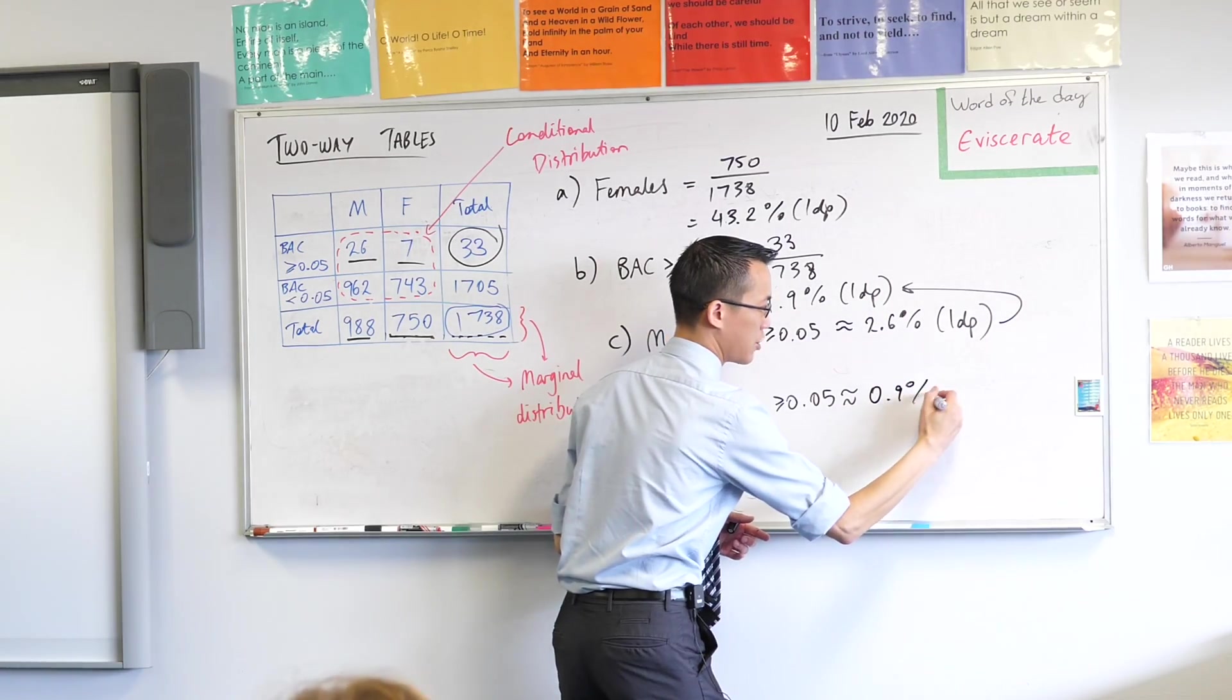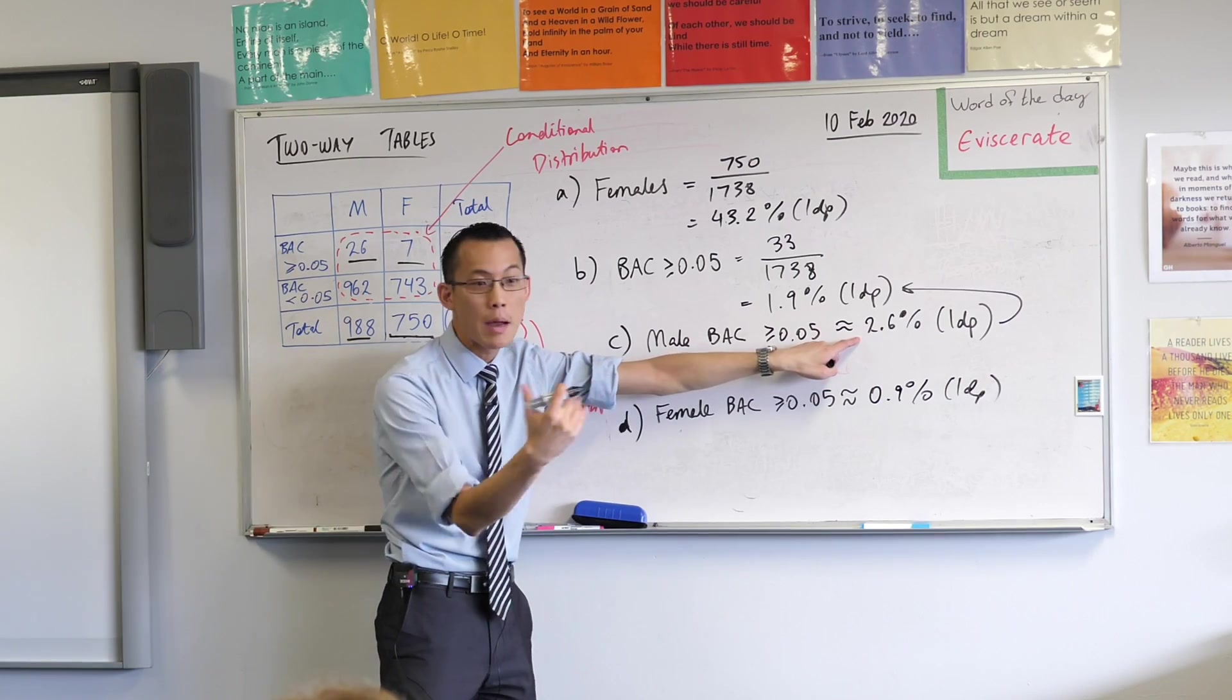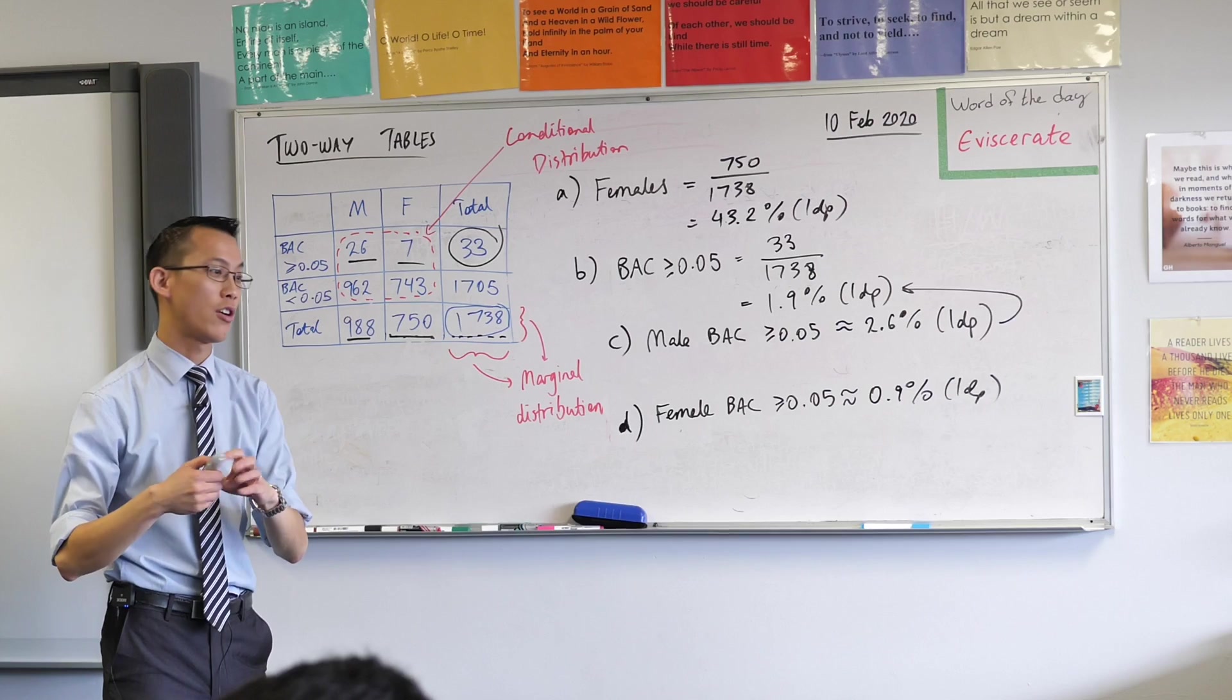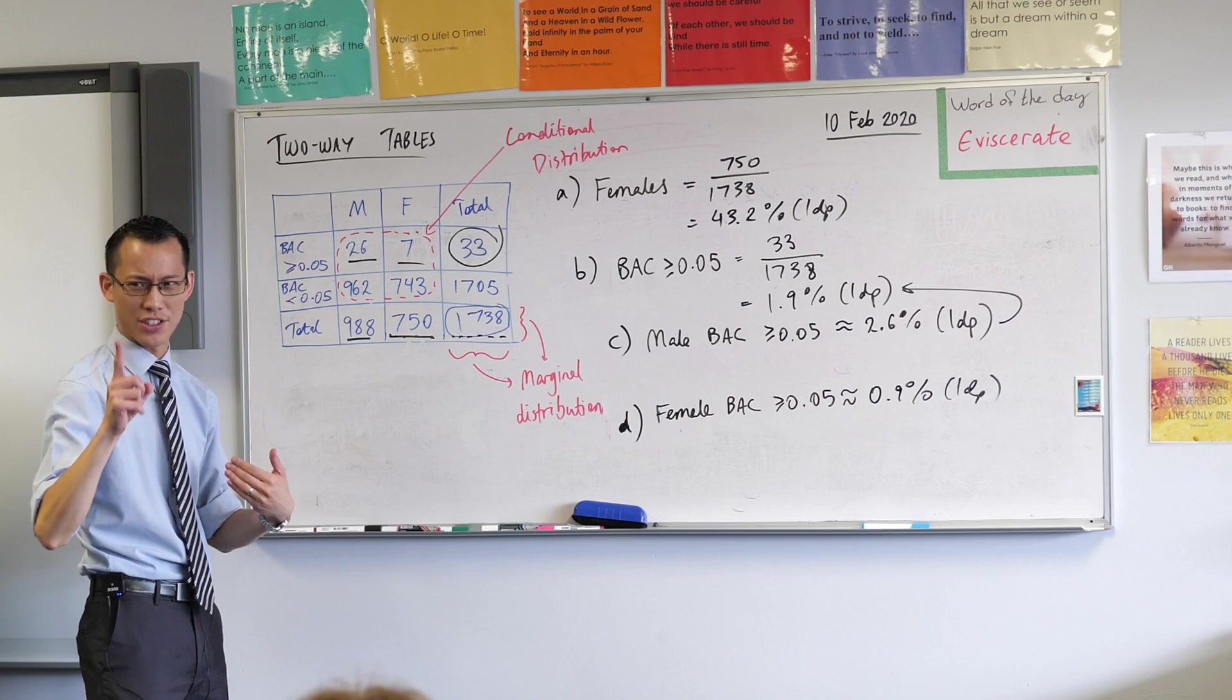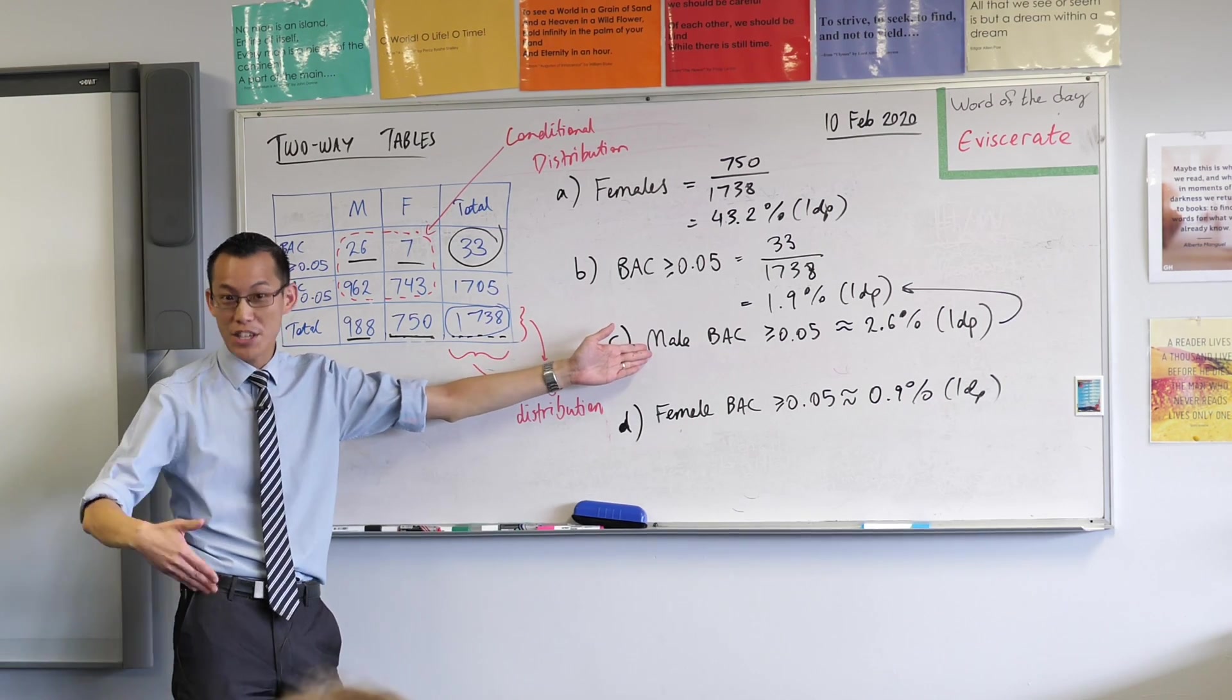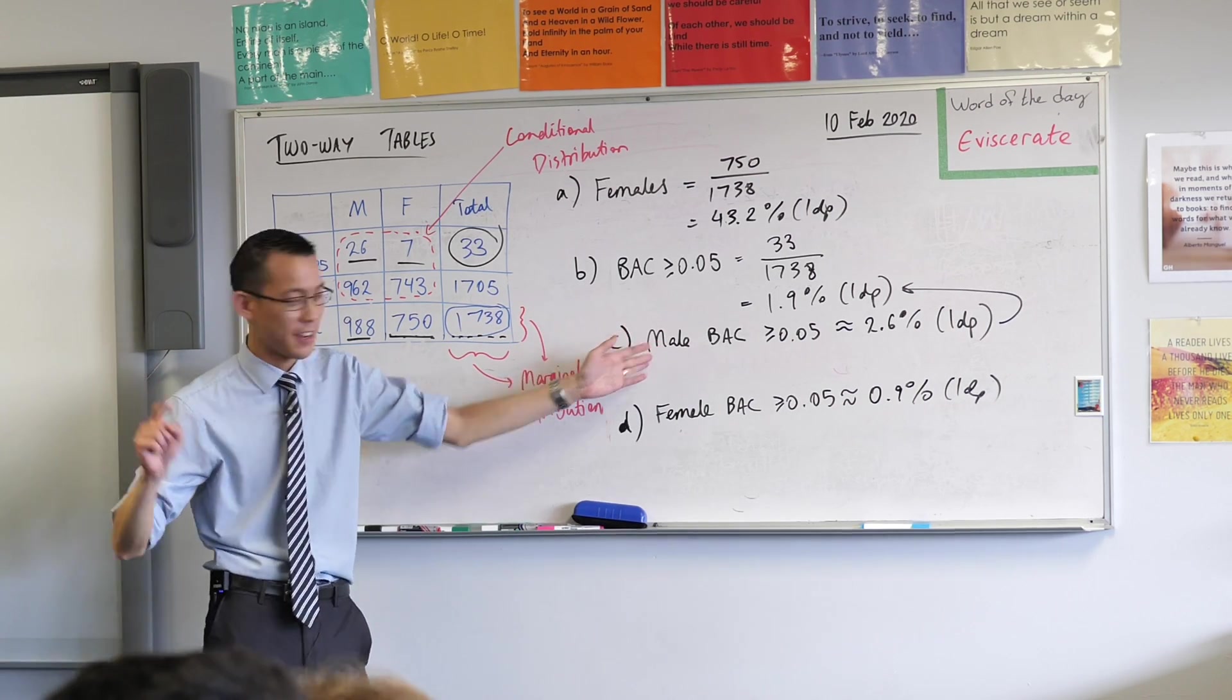0.9, which is almost a third of this number here, isn't it? So we're talking about proportions. Now, this is really important because you can actually draw conclusions of this. Not only can you, insurance companies do, and that's why if you are a male driver, especially if you are under 25, you are in the highest risk-taking category and therefore have the highest insurance premium by a lot.